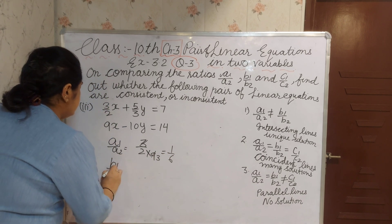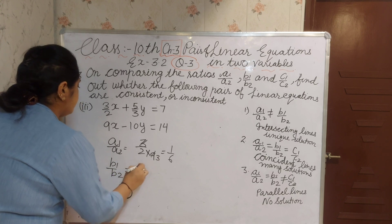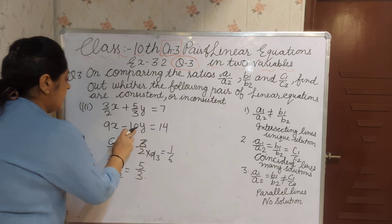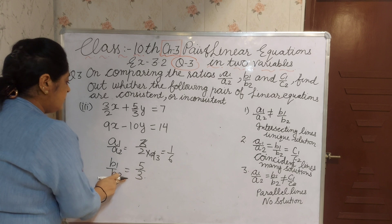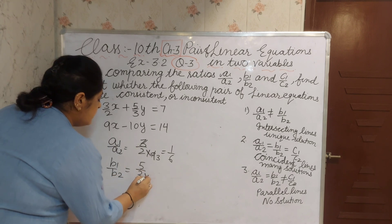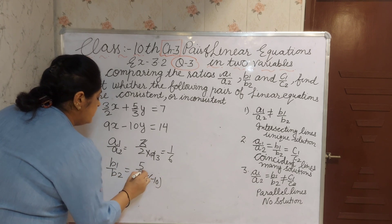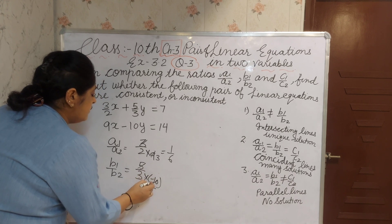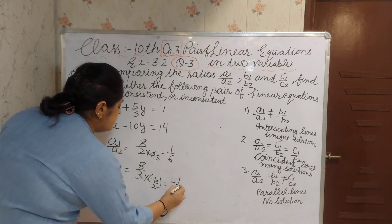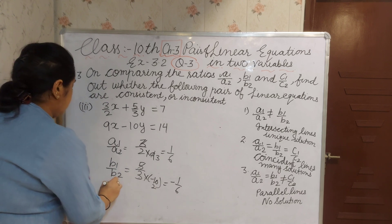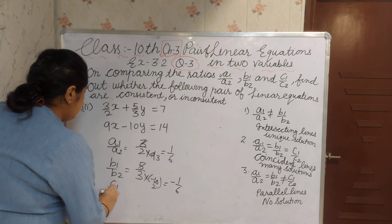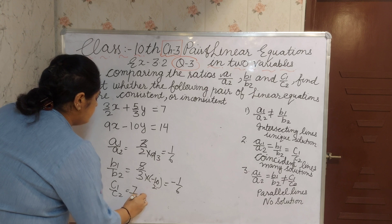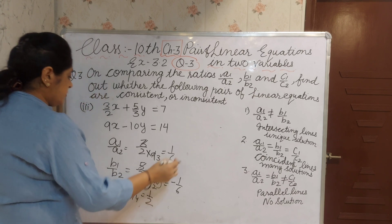Now B1 by B2: 5 by 3 as numerator and minus 10 as denominator. Reducing the term, 5 twos and 3 multiplied by minus 2, you will get minus 1 by 6. Now C1 by C2 is 7 by 14. Reducing the term, you will get 1 by 2.